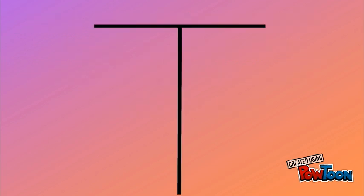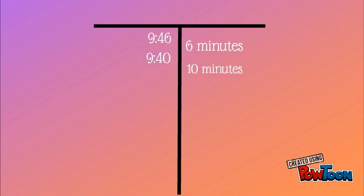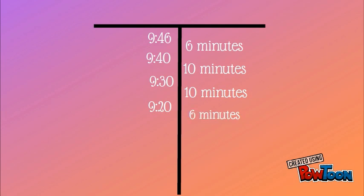Because we're finding the start time, we have to work backwards. Let's use the T-Chart, starting at 9:46 and going back 6 minutes to 9:40. And 10 minutes ago it'll be 9:30. Another 10 minutes ago it was 9:20. And 6 minutes ago it was 9:16.